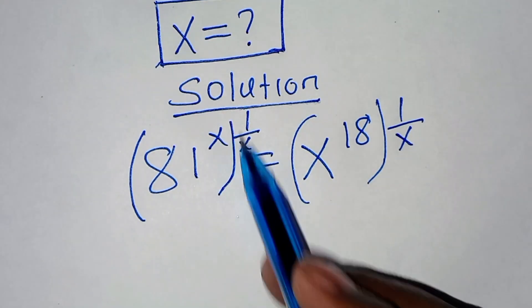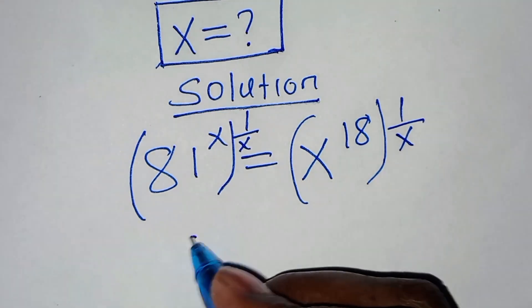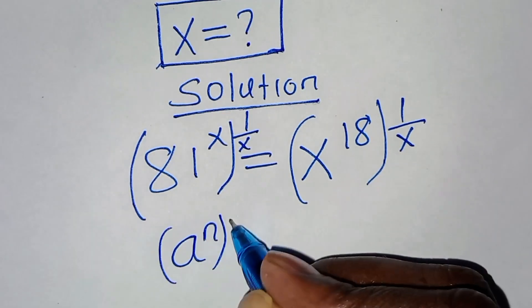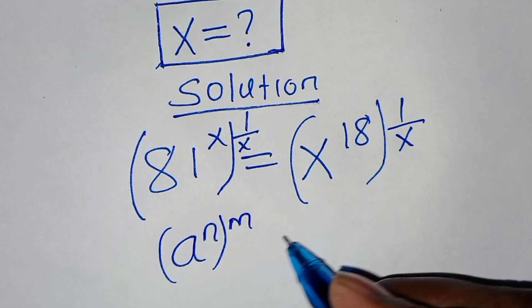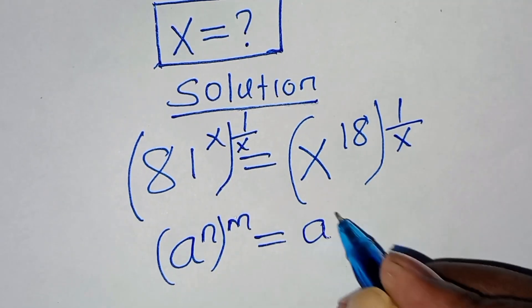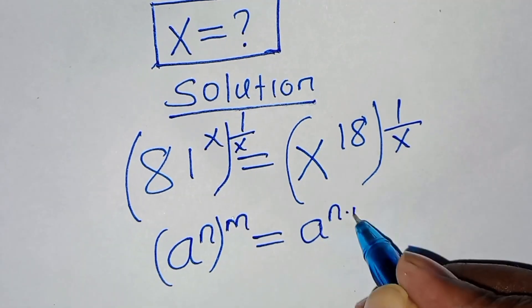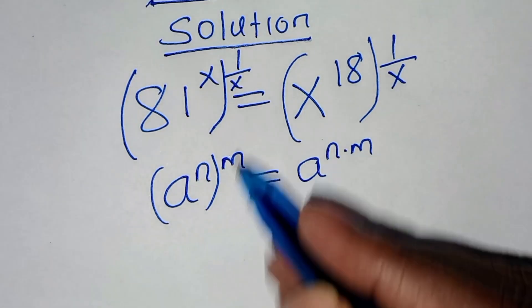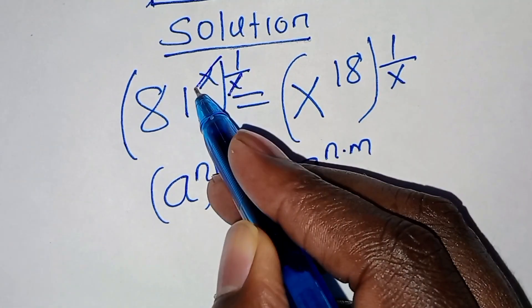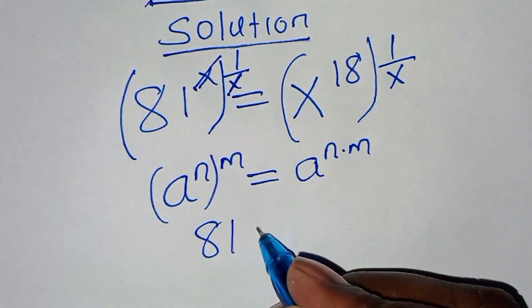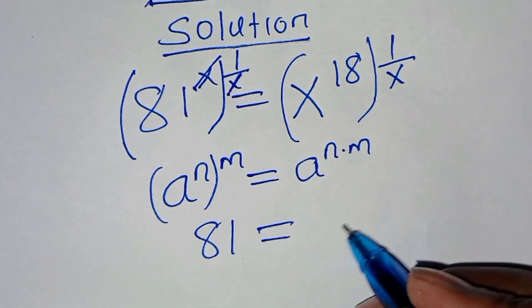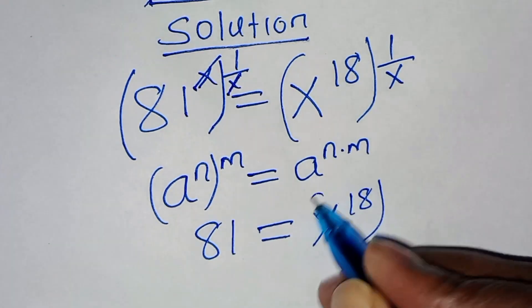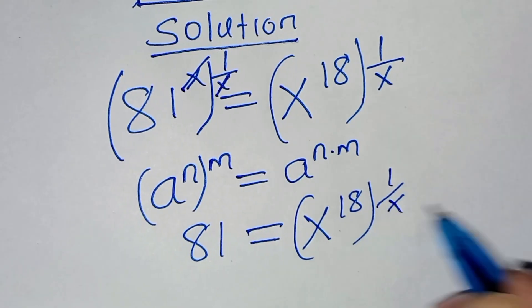81 to the power x times 1 over x — this is in the form of a to the power n, raised to the power m, which we can express as a to the power n times m. Applying this property, we simplify x here. So this is 81, which is equal to x to the power 18 raised to the power 1 over x.